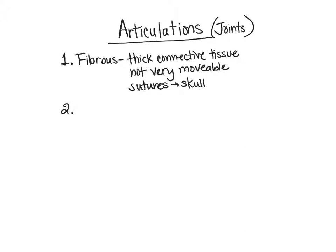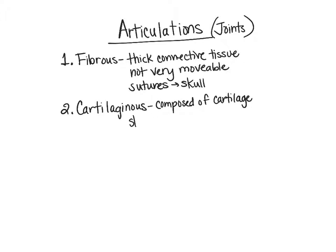The second type of joint is the cartilaginous joint. As its name implies, it's composed of cartilage. These joints are slightly more movable than fibrous joints, though still not very movable overall.